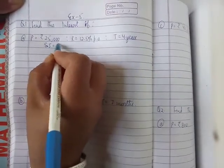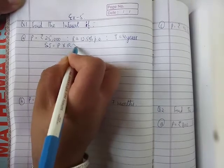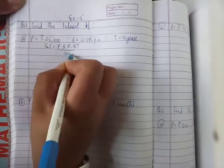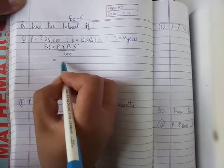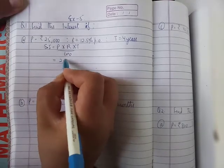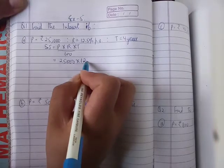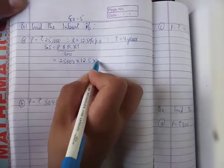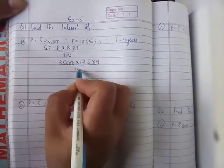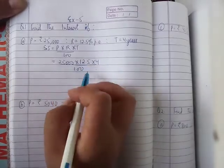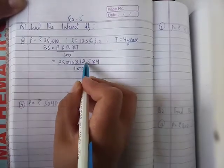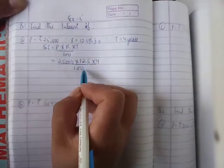Simple interest is equal to P into R into T upon 100. Its formula is the principle of rate. 25,000 times 2.5 in time for years. Divide by 100.